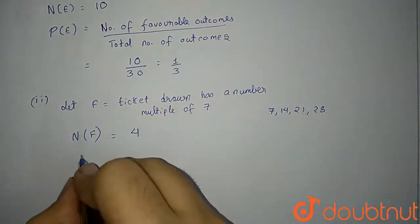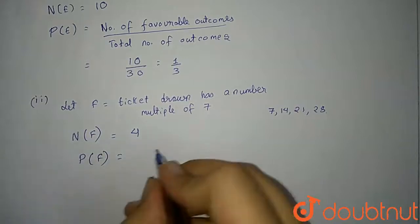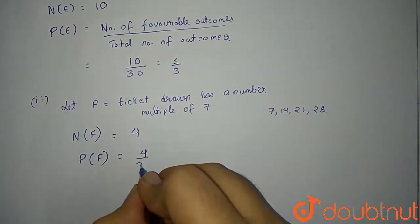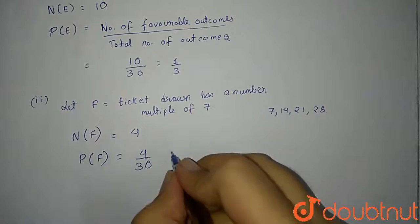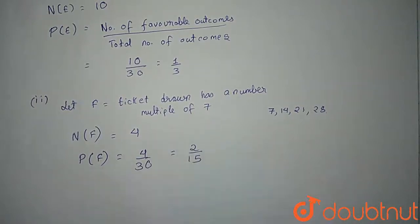What will be N of F? It will be four. And what will be the probability of F? It will be four upon 30, which is also two upon 15. We have calculated the probability of two events.